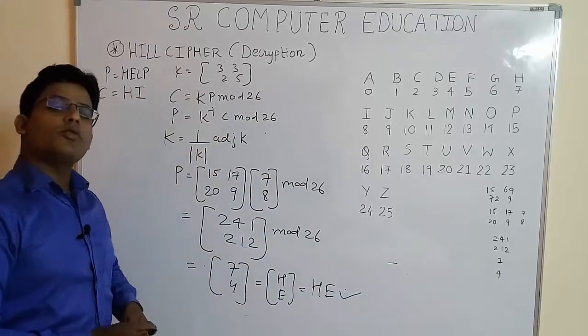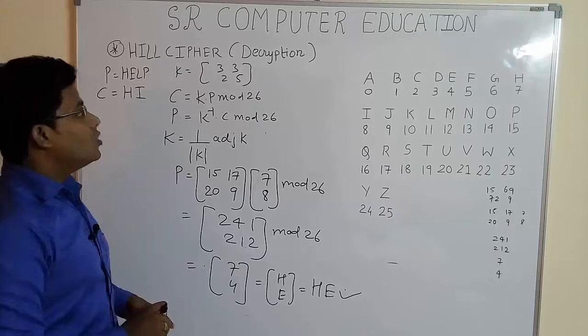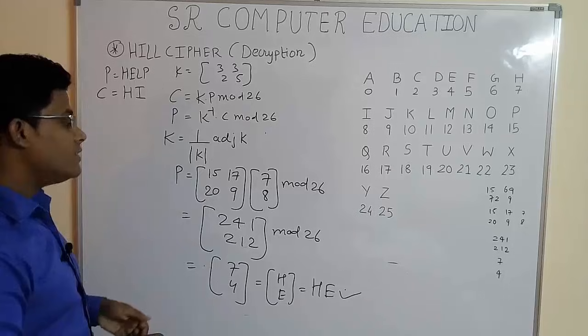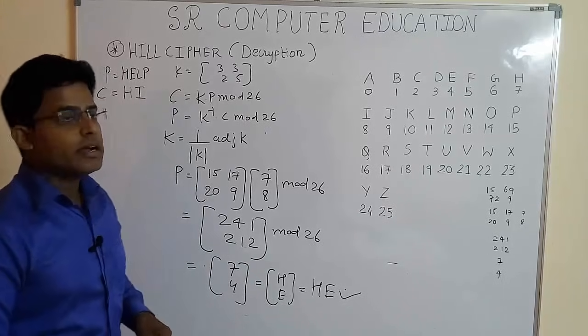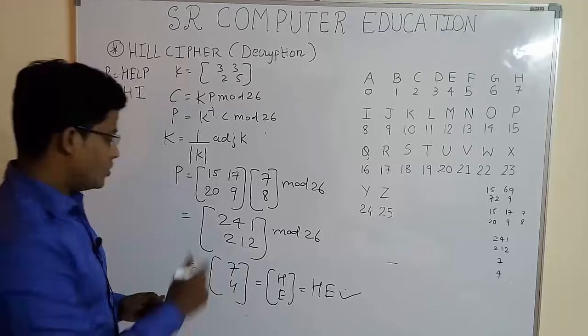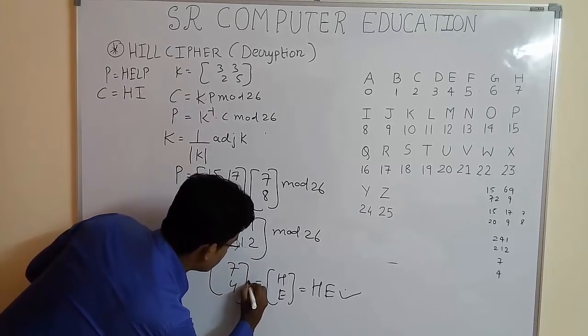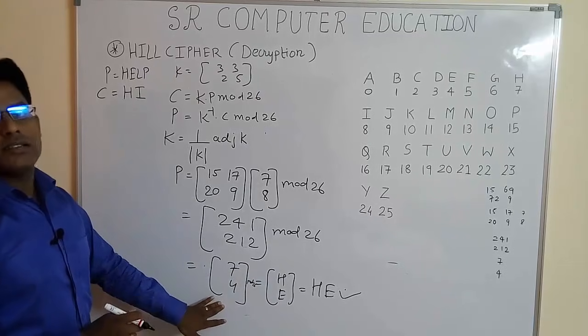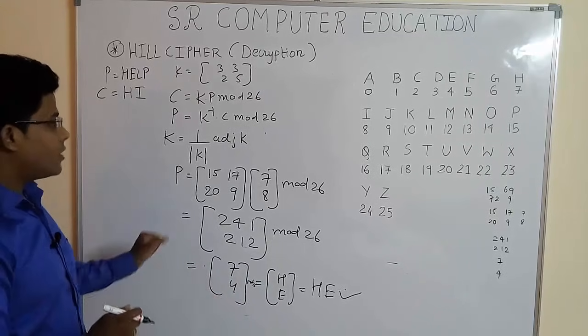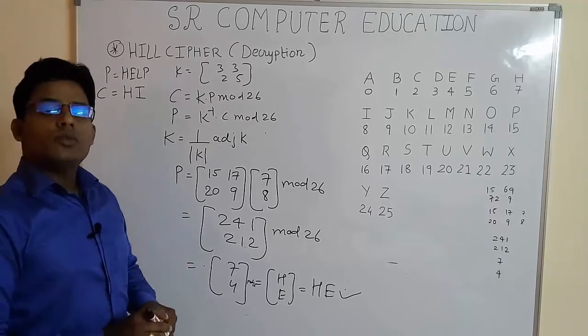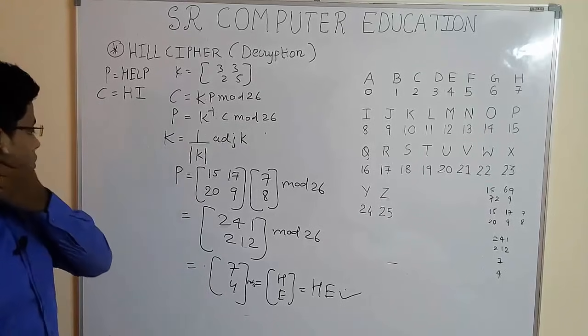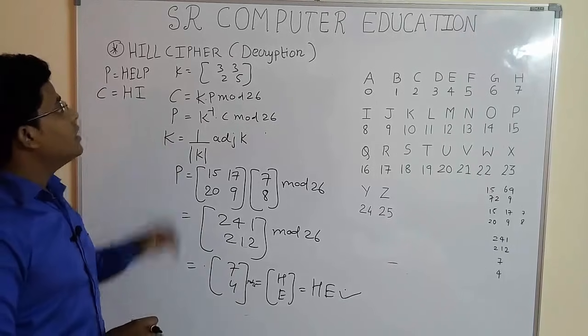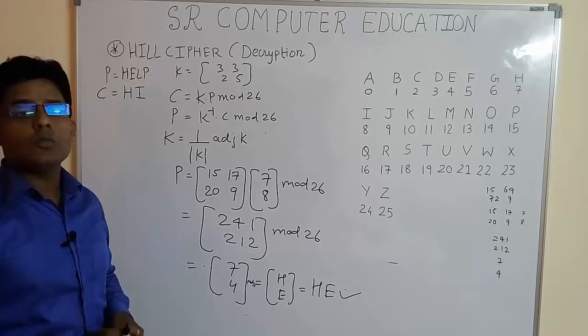So this is the process of how to do the decryption when you have ciphertext using Hill cipher technique when the given matrix is 2 cross 2. Here I told you, you have to write mod 26 here to just represent that the mod 26 operation has been performed. So students, this is how you do decryption in Hill cipher when 2 cross 2 matrix is given.